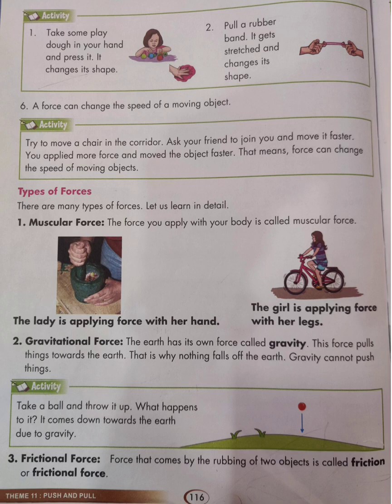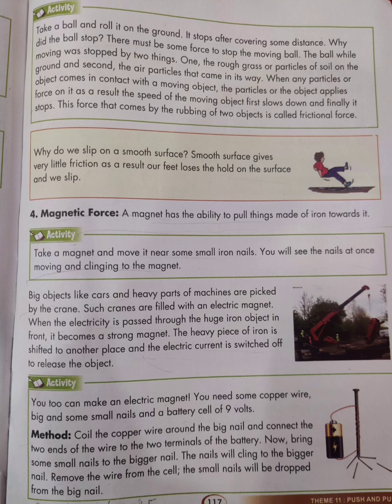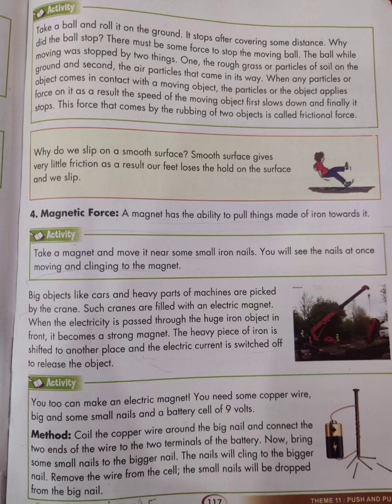Number 3 is frictional force. The force that comes by the rubbing of two objects is called friction or frictional force. Take a ball and roll it on the ground — it stops after covering some distance. Why did the ball stop? There must be some force to stop the moving ball. The ball while moving was stopped by two things: one, the rough grass or particles of soil on the ground; and second, the air particles that come in its way. This force that comes by the rubbing of two objects is called frictional force.